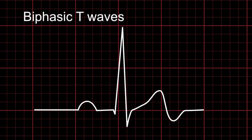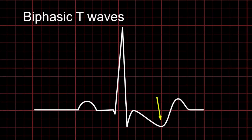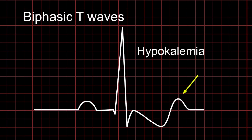Now there is a small difference in the biphasic pattern in both conditions. We will have a positive wave first followed by a negative wave in case of MI, and in the case of hypokalemia you will have a negative wave first followed by a positive wave.